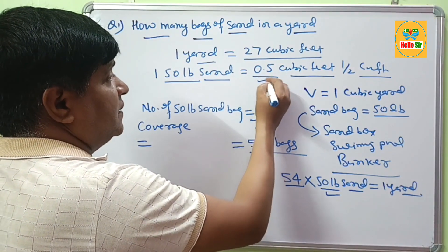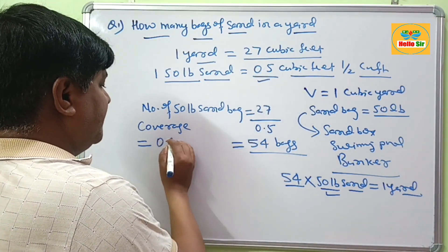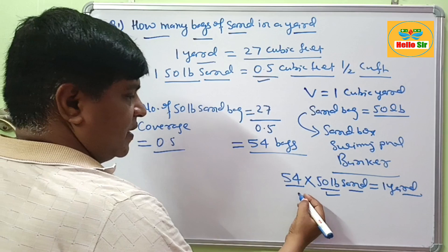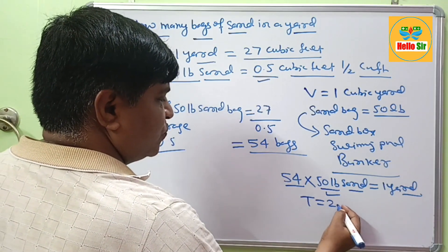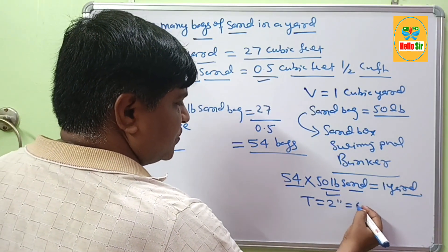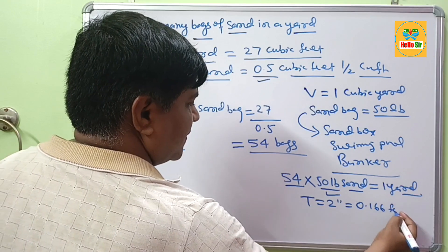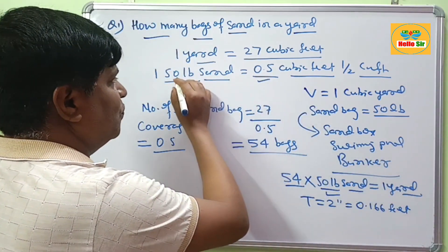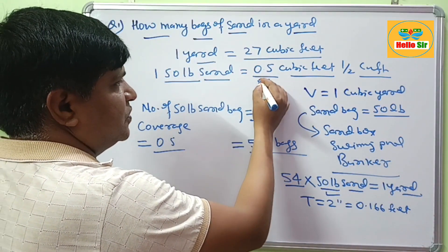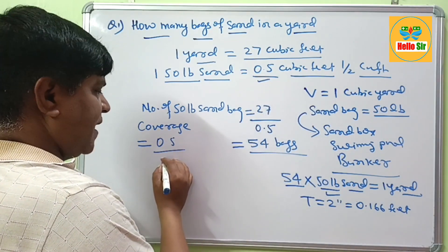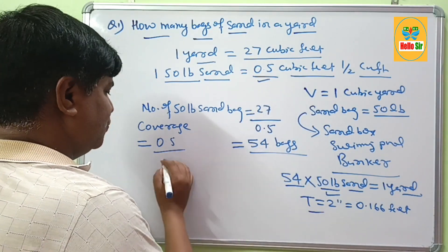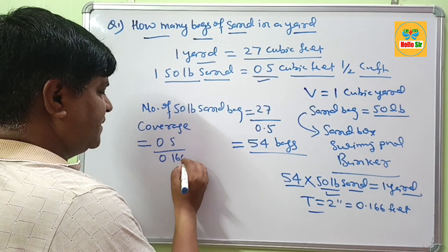If you want to calculate the coverage of 1 50 lb bag: 1 bag yields 0.5 cubic feet. If the thickness is 2 inches, that means 0.166 feet. The total yield of 0.5 cubic feet divided by the thickness of 0.166 feet.